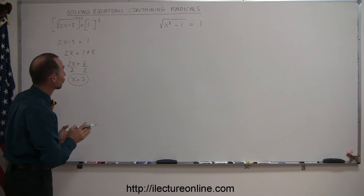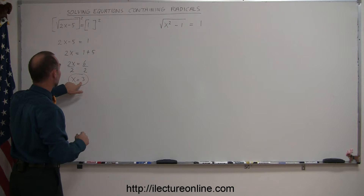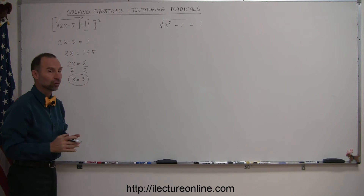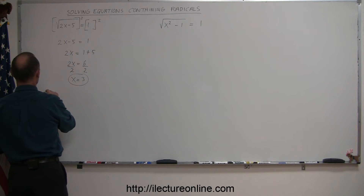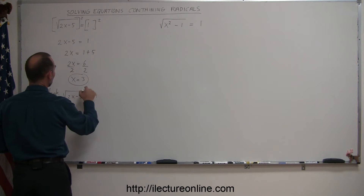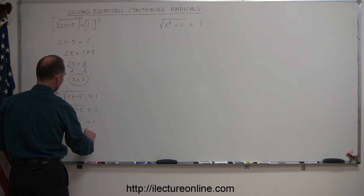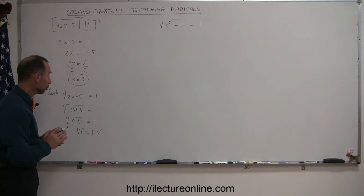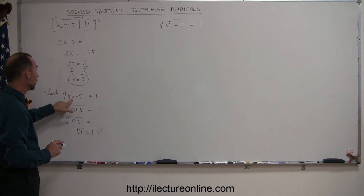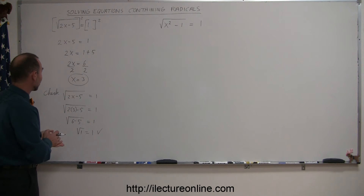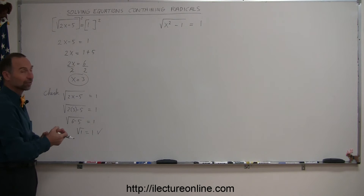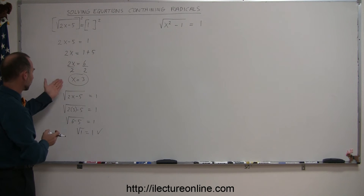Before you know for sure that's the solution, it's always a good idea to plug the value back into the original equation to make sure it does not cause any problems. So we're going to do a check. We had the equation: the square root of 2x minus 5 is equal to 1. We plug in 3 for x, so we have the square root of 2 times 3 minus 5 equals 1, or the square root of 6 minus 5 equals 1, or the square root of 1 equals 1, which is correct. What you're usually looking for is: sometimes when you plug the solution back into the radical, you may end up with a number underneath the radical that's less than 0, and you cannot take the square root of something less than 0 — that means the solution is not valid. But in this case, everything looks good. Solution is x equals 3.